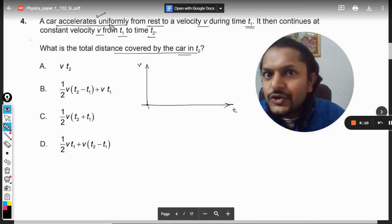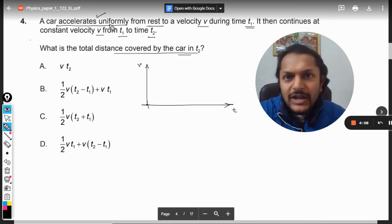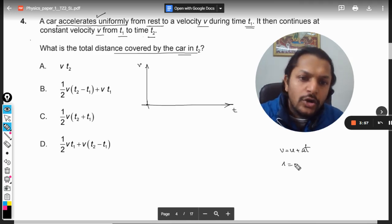Now the acceleration is uniform. So whenever there is a uniform acceleration, how does the graph of V and t look like? It becomes a straight line because there is uniform acceleration. The formula that we use is V is equal to U plus AT.